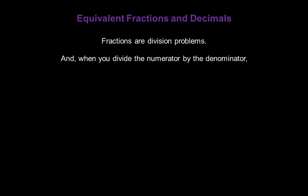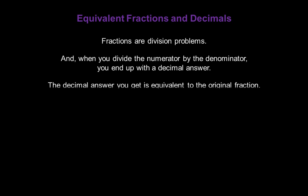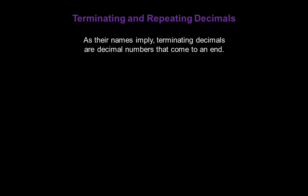Fractions are just division problems. When you divide the numerator of a fraction by its denominator, you end up with a decimal answer. The decimal answer you get is equivalent to the original fraction. As their names imply, terminating decimals are decimal numbers that come to an end — numbers like 0.5 or 0.782. They terminate or end.